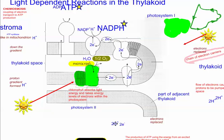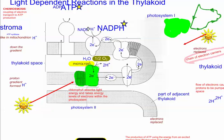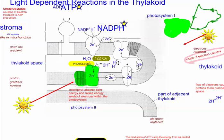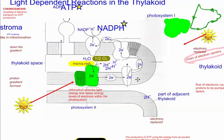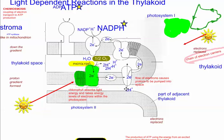We're left with hydrogen, which gets split further into protons and electrons. Those electrons come back to replace the ones that got excited and bumped to the electron transport chain. This area inside ends up being filled with more protons — they build up inside the thylakoid space as the movement of electrons also contributes to pumping more protons into the space.